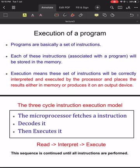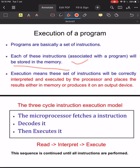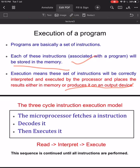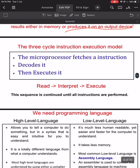Programs are basically a sequence or set of instructions. Each of these instructions is stored in memory by the programmer. Execution means that this set of instructions will be correctly interpreted and executed by the processor, and it will place the result in memory or produce the result on an output device.